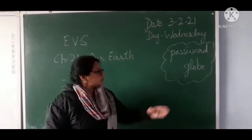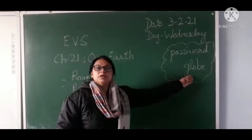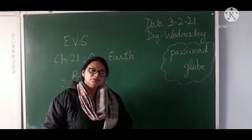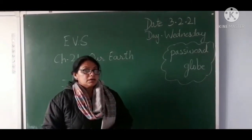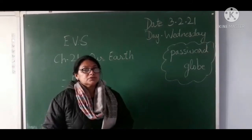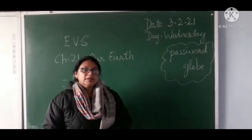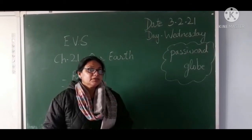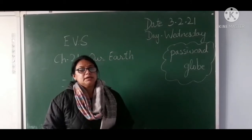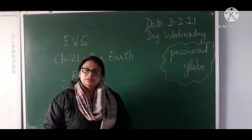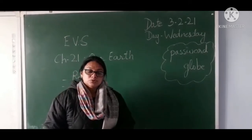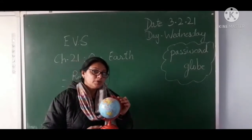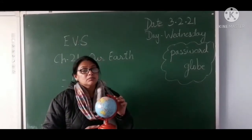Our password for today is L.O.B.E. — LOBE. It is a noun word. The meaning of this word is a round object on which the map of earth can be drawn, in other words, a round object having the map of earth on it. So here we have a globe with us. It can be called a model of the Earth.